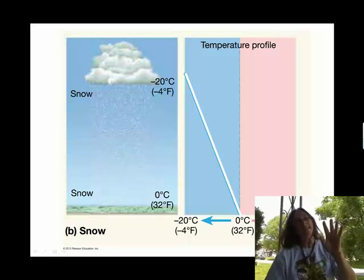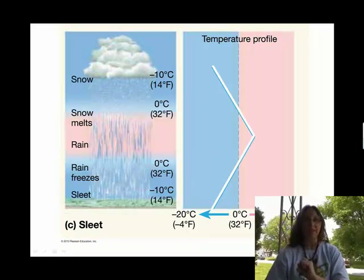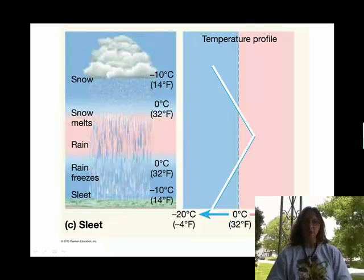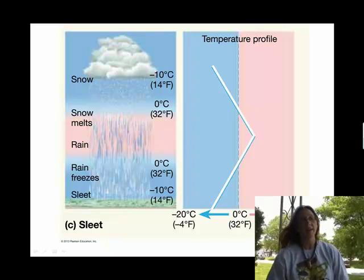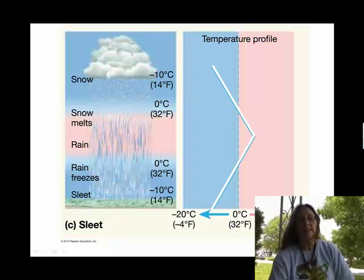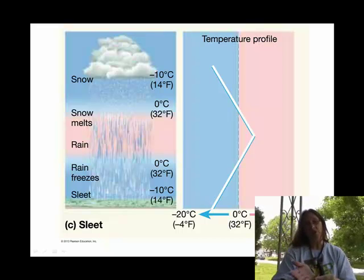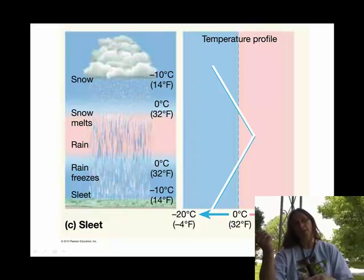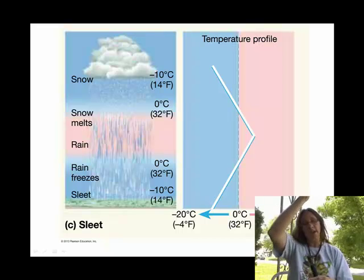Well, remember I said that sleet and freezing rain kind of go together, and this is why they go together. Notice this temperature profile over here. Notice what it's saying is that actually, as you go up in elevation for a little bit, temperatures are getting warmer. And then as you go up in elevation a little bit more, temperatures are getting cooler.